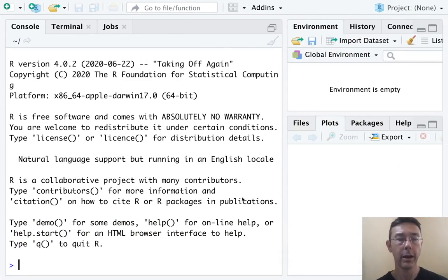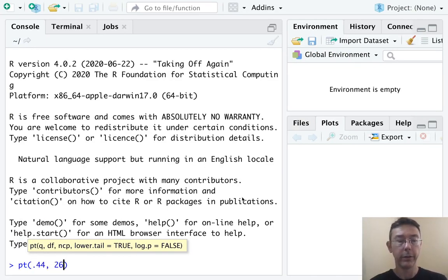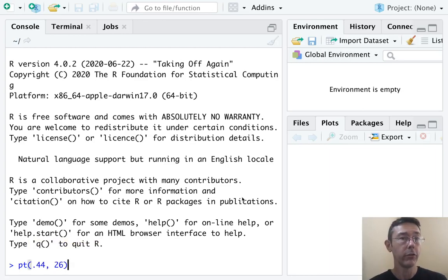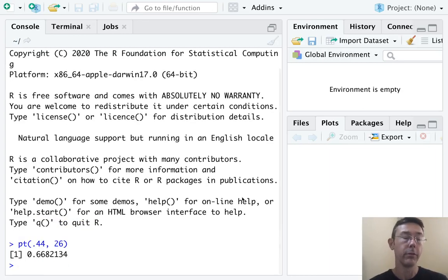Okay, so let's switch over to R and take a look. Let's do PT of 0.44, 26. Again, the t-value we're interested in, and then the number of degrees of freedom. We get 0.668.